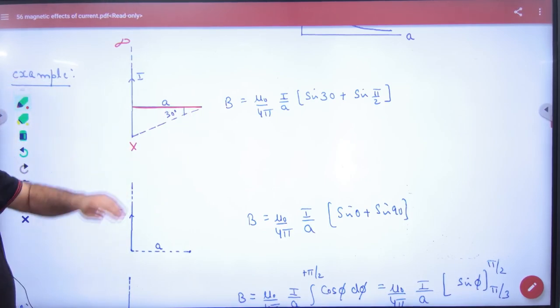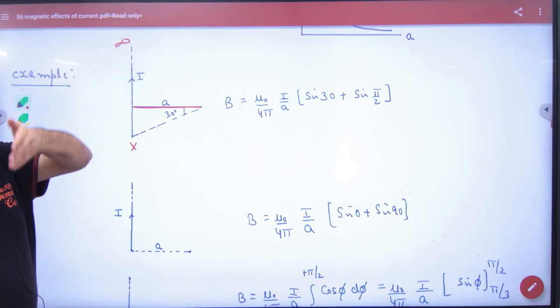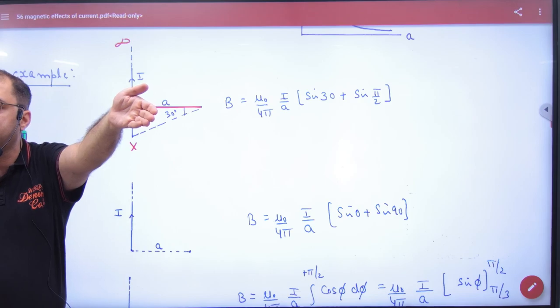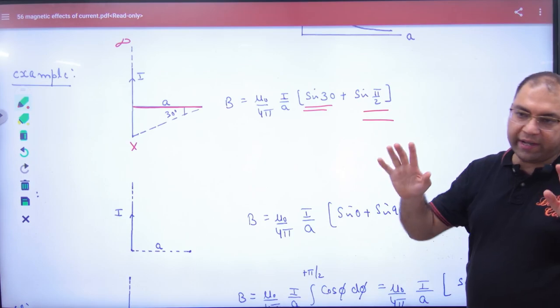So rule number one: how much is the angle below this line, phi1? 30 degrees. And what will be the angle phi2? 90 degrees, because the angle at infinity is 90. So when we put the formula, one angle is 30 and one angle is 90.